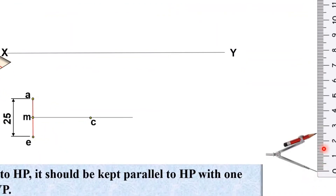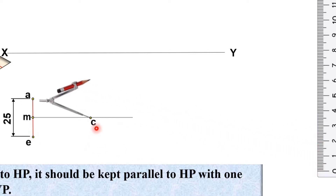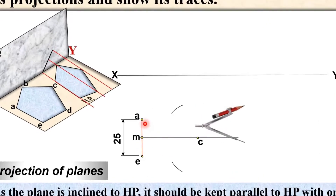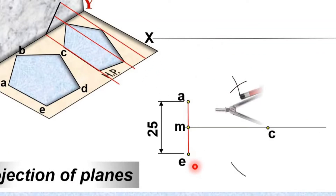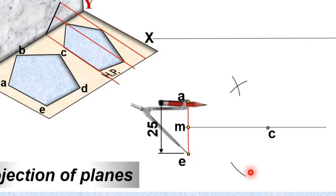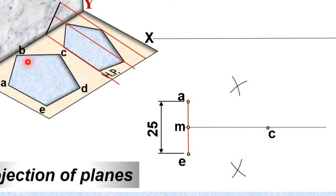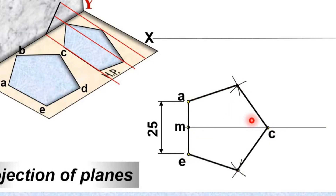Take a compass and set the radius equal to the length of the side, that is 25 mm. Take C as the center and draw arcs on both sides. With the same radius, take A as center and draw an arc, then take E as center and draw an arc, so that you get two intersection points — those are B and D. Give the names B and D and join all the points with a smooth curve. This is the pentagon in the first stage.